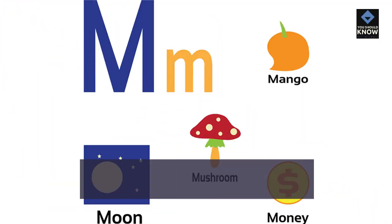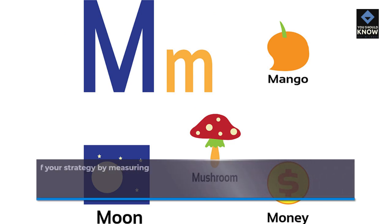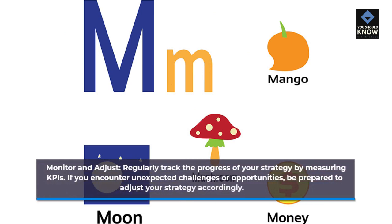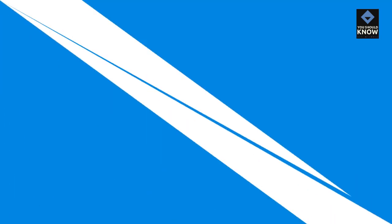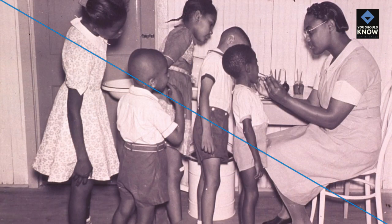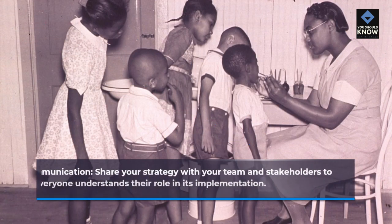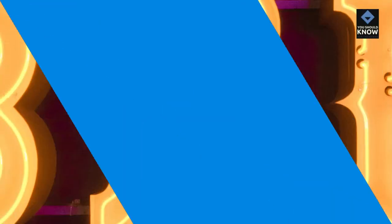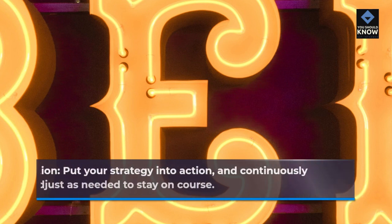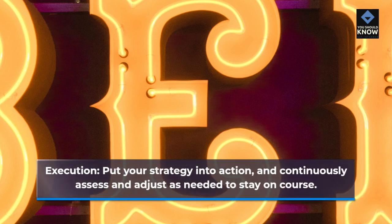Monitor and adjust: Regularly track the progress of your strategy by measuring KPIs. If you encounter unexpected challenges or opportunities, be prepared to adjust your strategy accordingly. Communication: Share your strategy with your team and stakeholders to ensure everyone understands their role in its implementation. Execution: Put your strategy into action, and continuously assess and adjust as needed to stay on course.